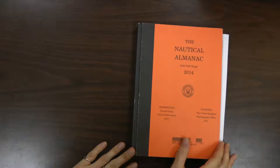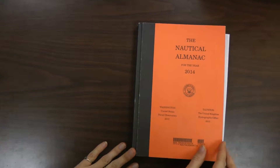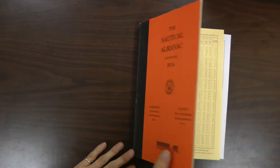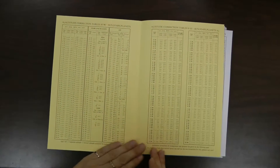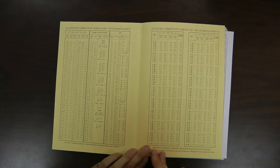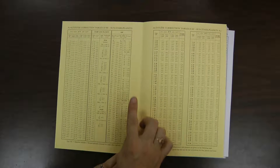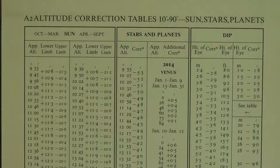To obtain our altitude correction, go to the nautical almanac and open the book to the front cover. The left two columns list altitude corrections for the sun, stars, and planets. Find your apparent altitude and note the correction in arc minutes for altitude correction.